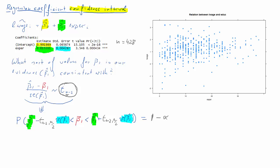n here is 428, so n minus 2 is 426 degrees of freedom. Let's set alpha to 1%. That means the probability we want for our confidence interval is 1 minus 0.01, or 0.99 — in other words, 99%. So we want a 99% confidence interval. We want to be pretty certain that whatever interval we calculate actually contains the unknown beta 1.